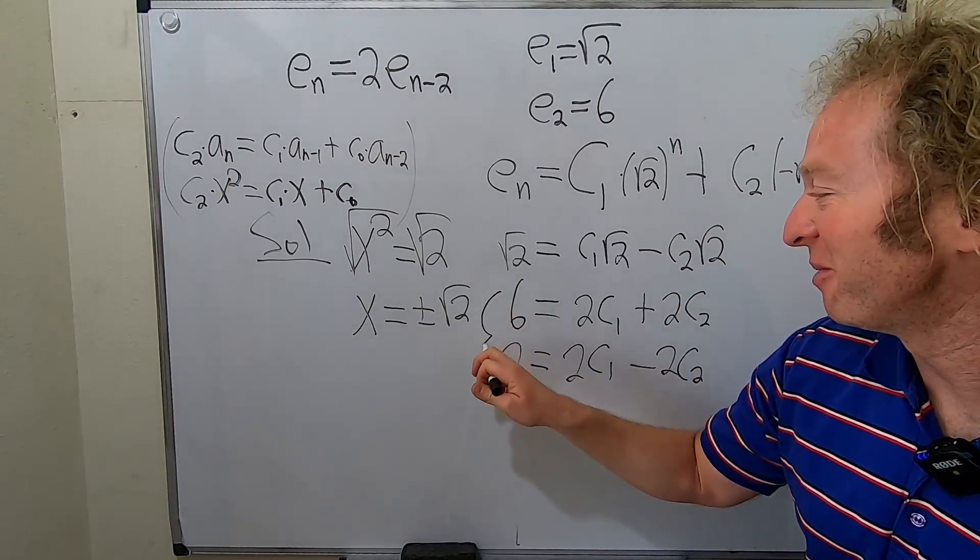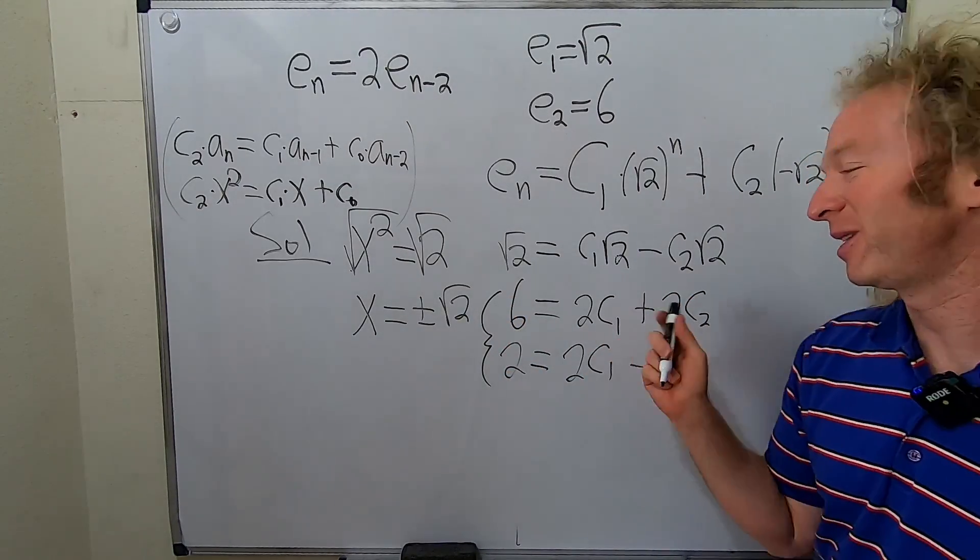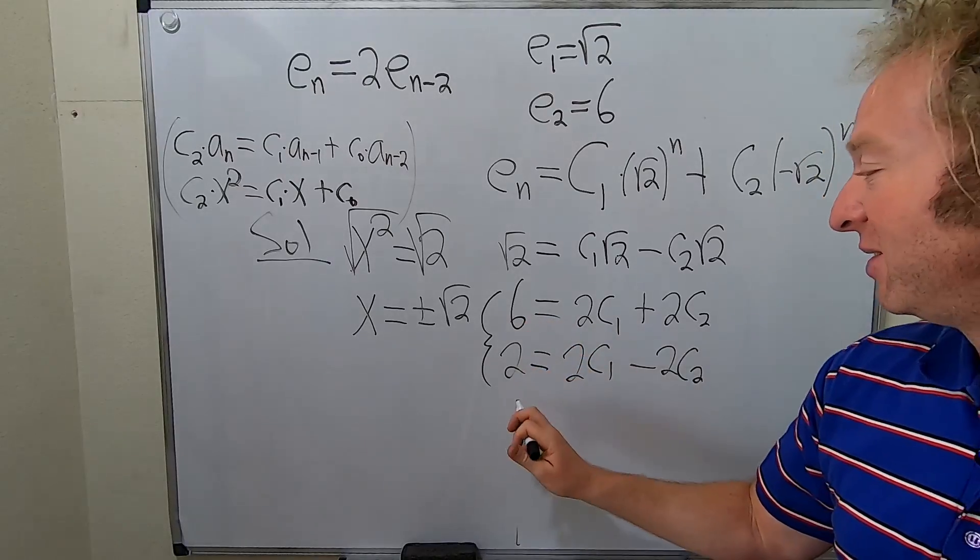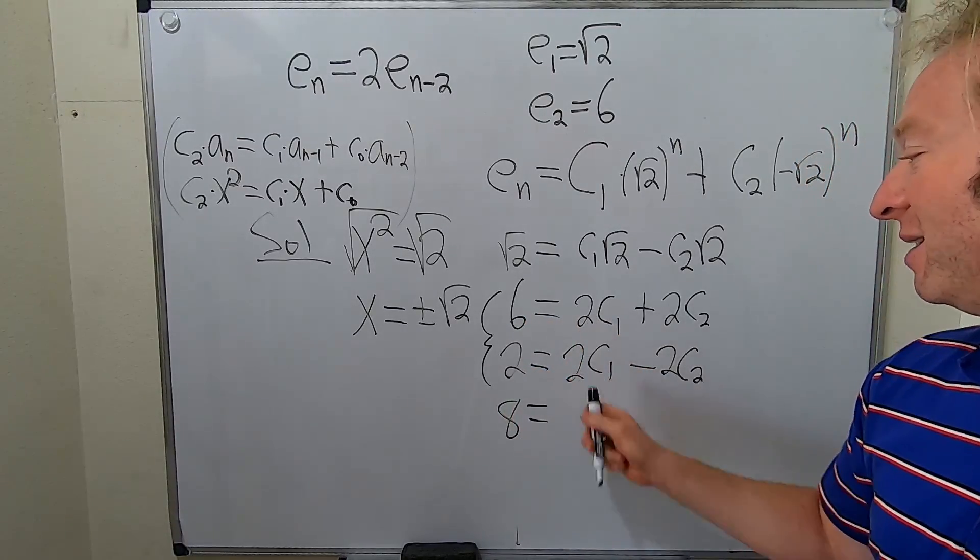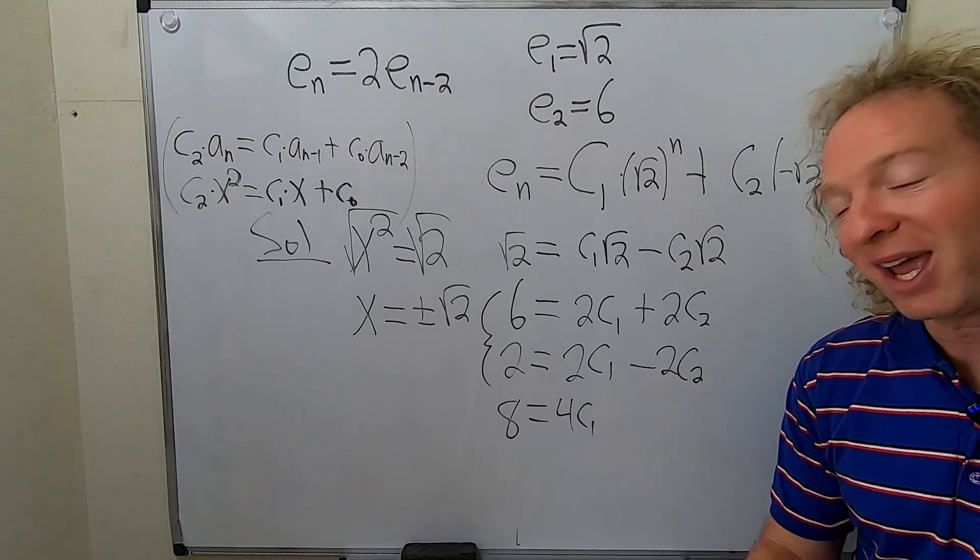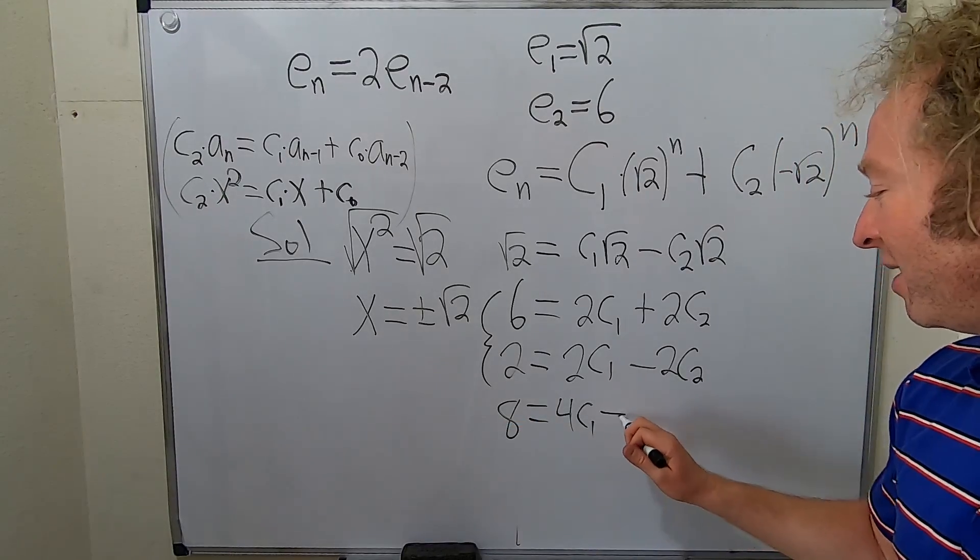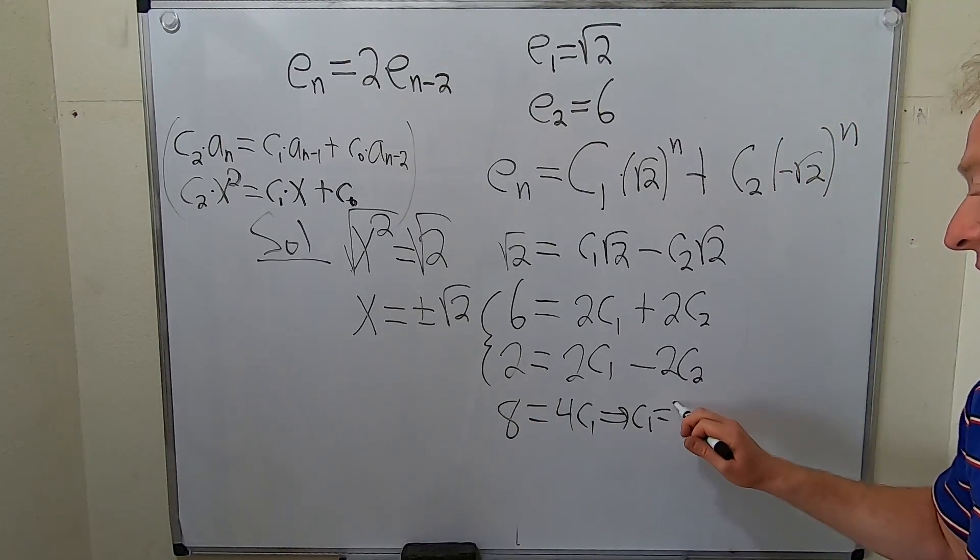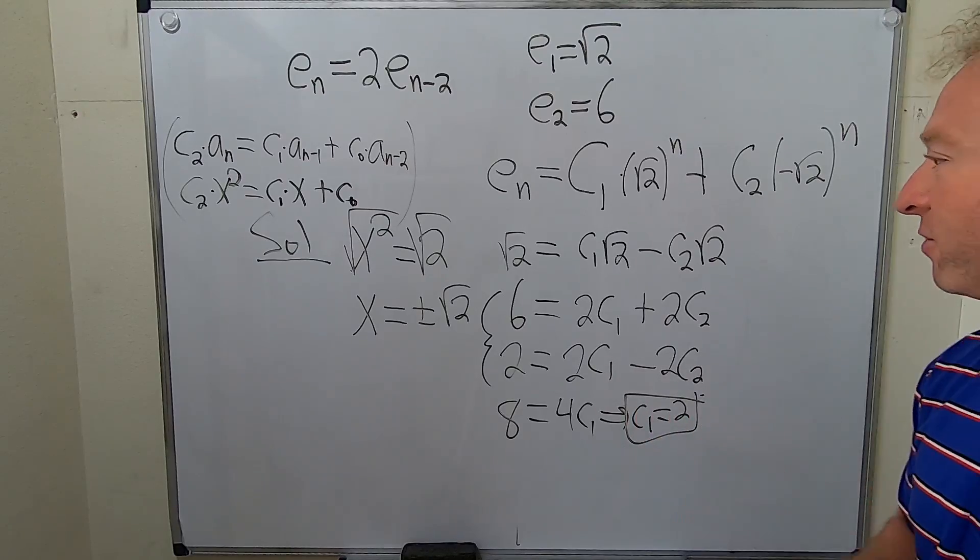This problem is so rigged. I had not done it until now. So it's kind of exciting that it's working out so nicely. You add these and you get 8. You add these and you get 4c1. You add these and it goes away, right? Divide by c1 and so we get the answer of 2. So that is our first constant.